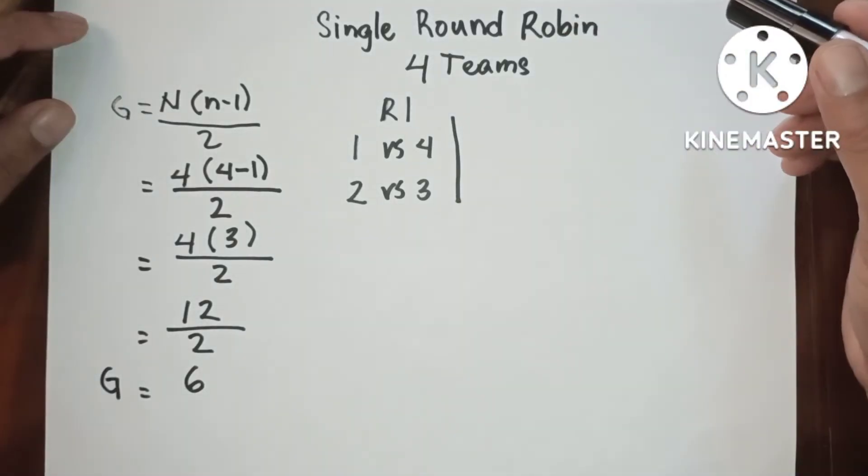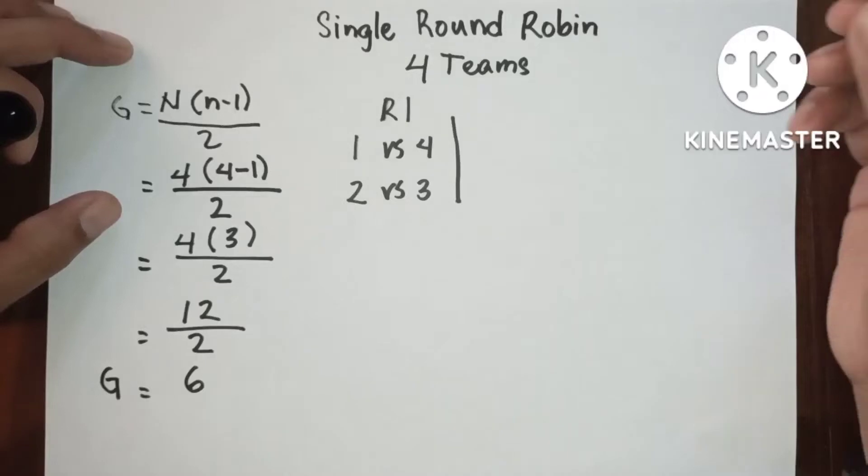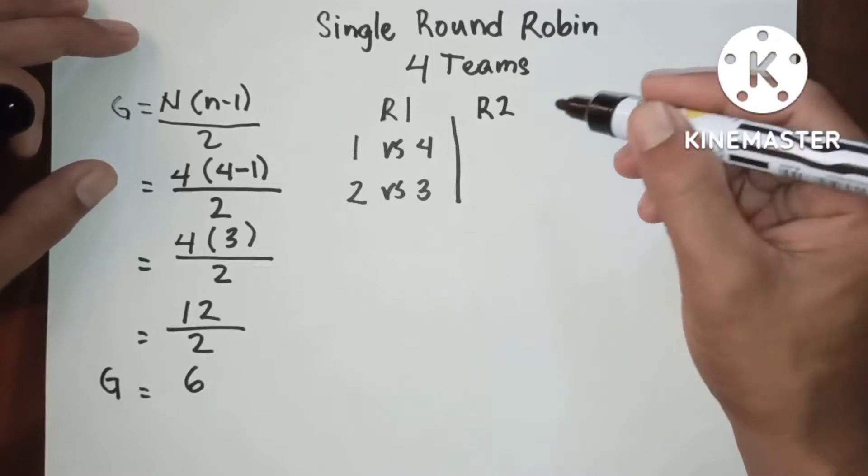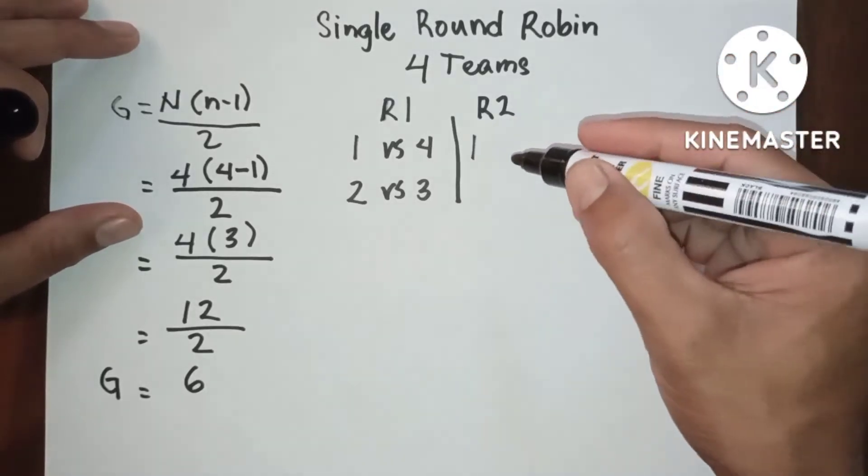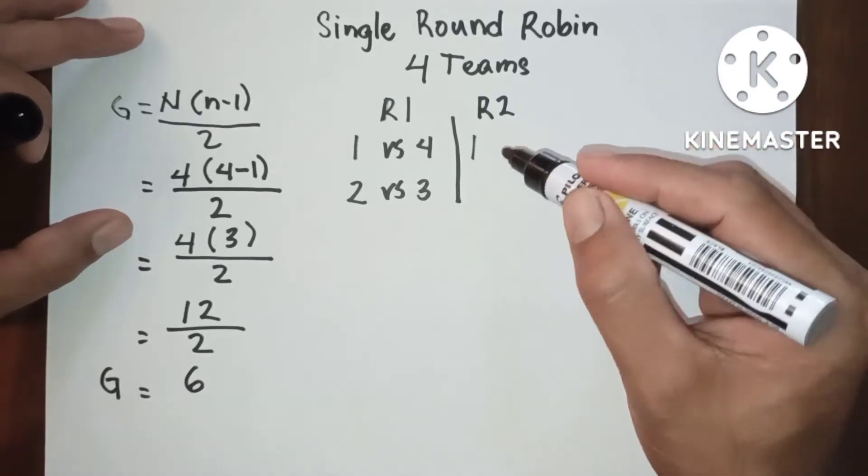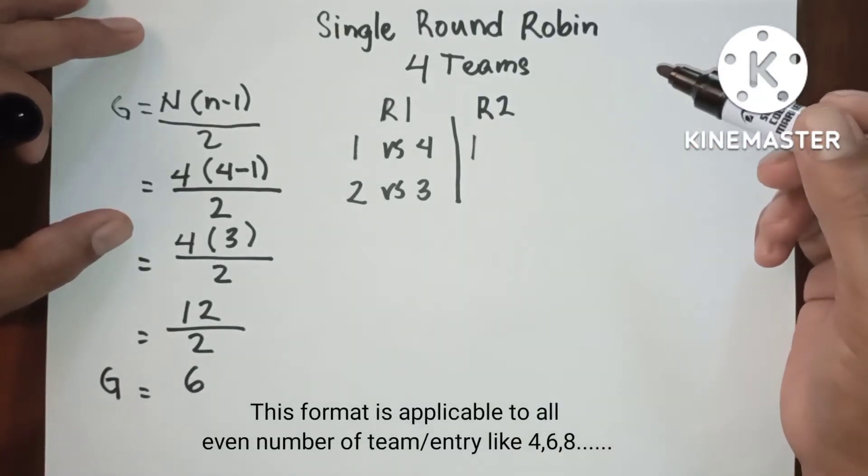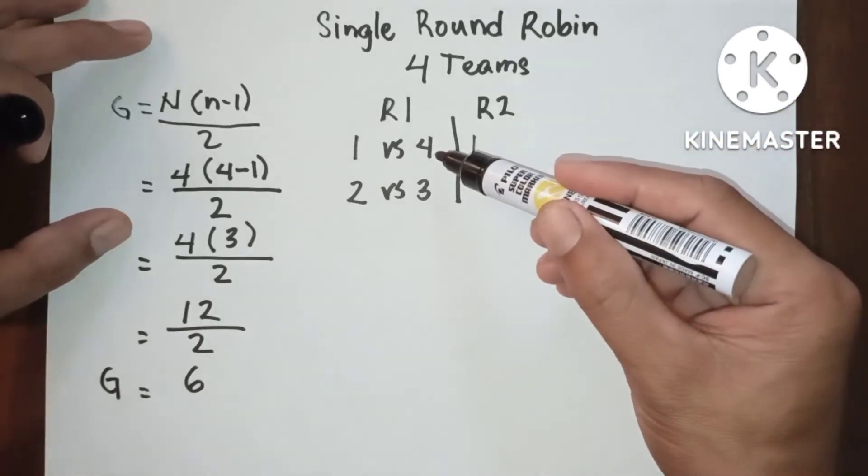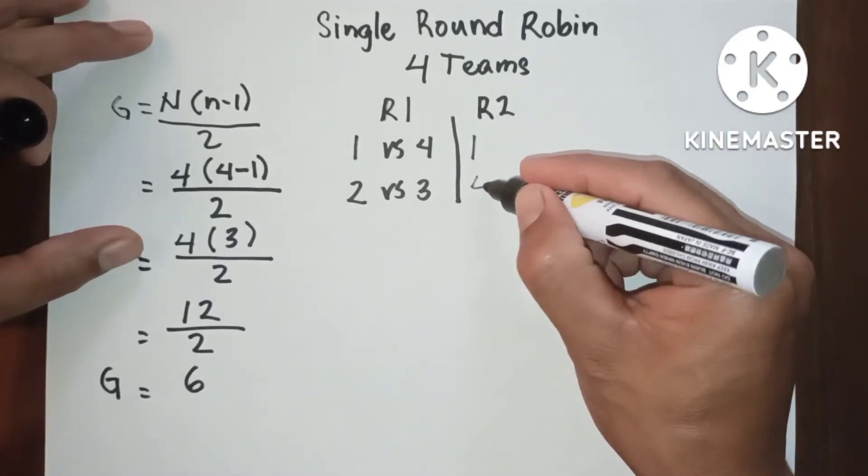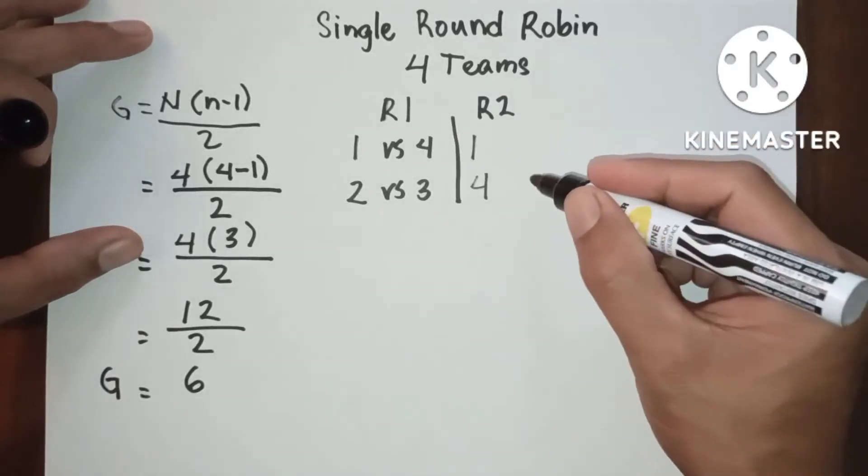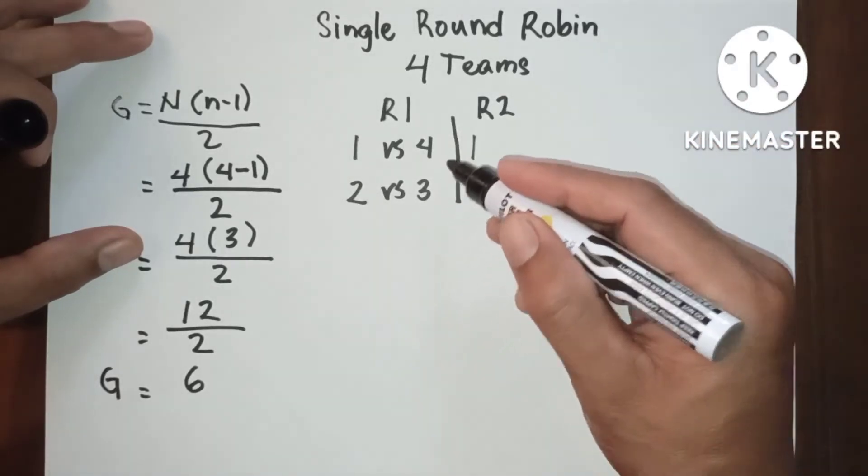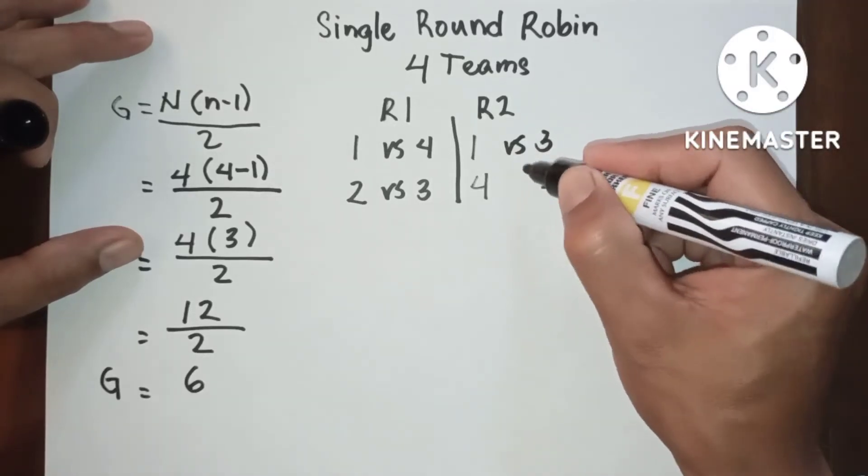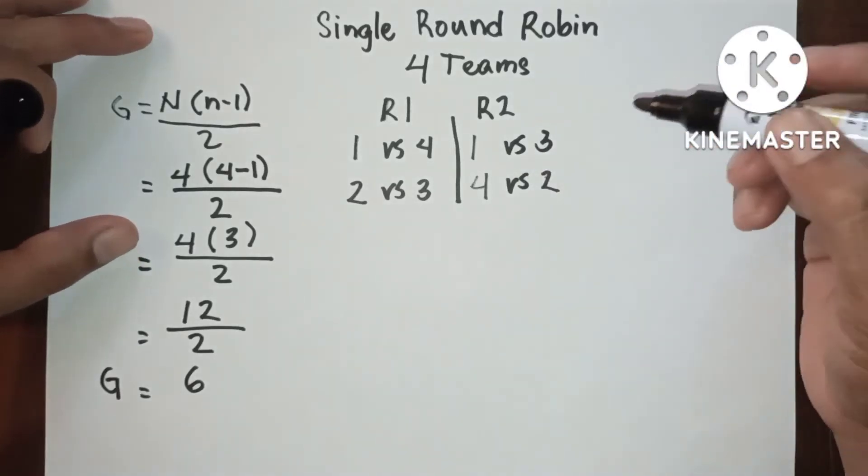Now let's proceed to round two. In round two, one will remain in the position and the other number of entries will rotate counter-clockwise, so that four will be placed here, and two will be placed here, and three will be placed up here. Now this is round two.